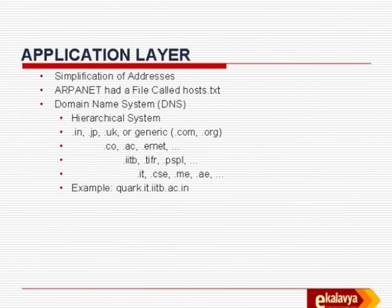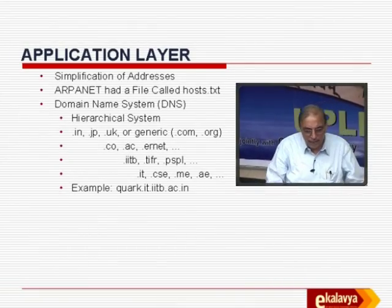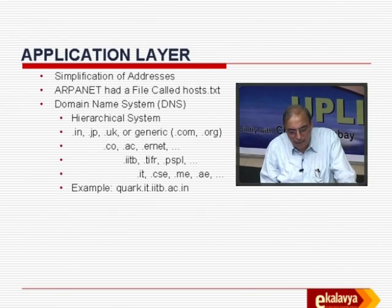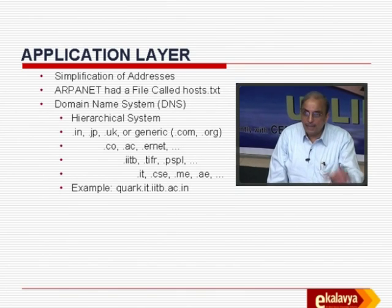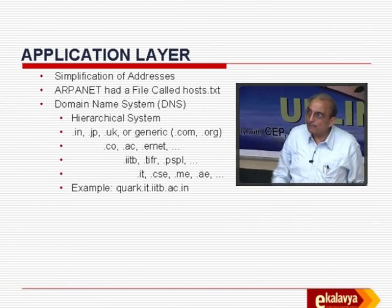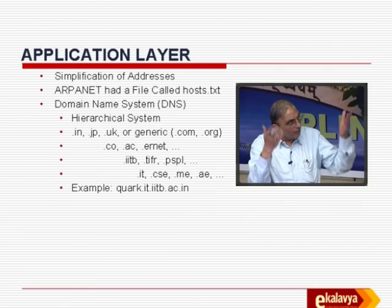Now comes something important from our perspective. We as human beings are not good at remembering numerical identities. To remember that someone's IP address is 191.16.144.73 is not easy. You would much more prefer something like dvp@it.iitb.ac.in. Consequently, a simplification of addressing occurred very early — in ARPANET itself there used to be a file called hosts.txt containing the name of the host and the IP address, used as a translation table. Even today, /etc/hosts serves exactly the same purpose.